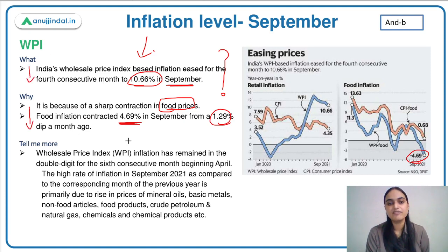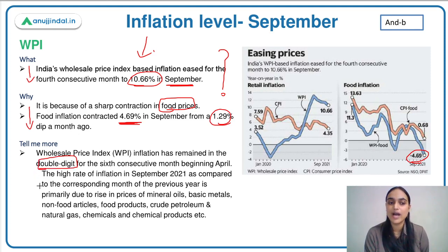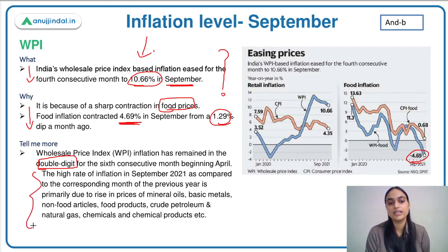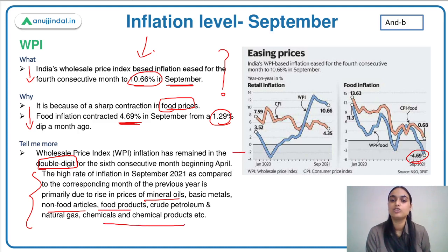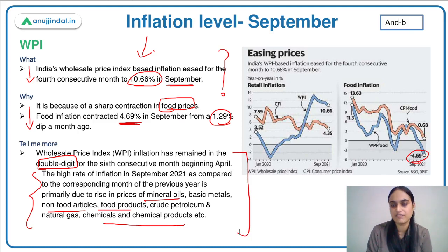Still, WPI is at a double-digit level. Comparing it with the previous year, it is so high because over the year there has been an increase in the price of mineral oil, basic metal, non-food articles, food products, crude petroleum, natural gas, chemicals, and chemical products, because of which WPI has risen to a two-digit level.